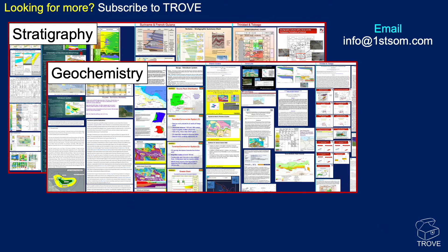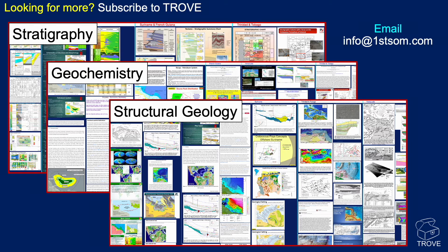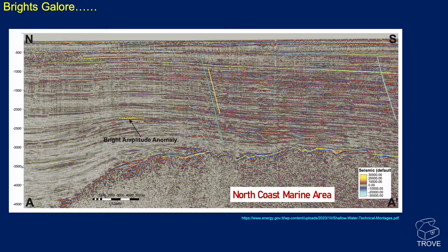This is getting added to all the time. In terms of structural geology, just trying to understand the evolution at a play level — what we can see here in the North Coast Marine area, we can see brights galore, the basement onlap to the south, thickening to the north, with lots of bright amplitude anomalies. These are Oligo-Miocene and younger sediments. There's great acoustic impedance contrast, and it kind of helps de-risk exploration drilling with amplitude versus offset or hydrocarbon indicator type studies. Lots of interesting-looking things just on this single line.